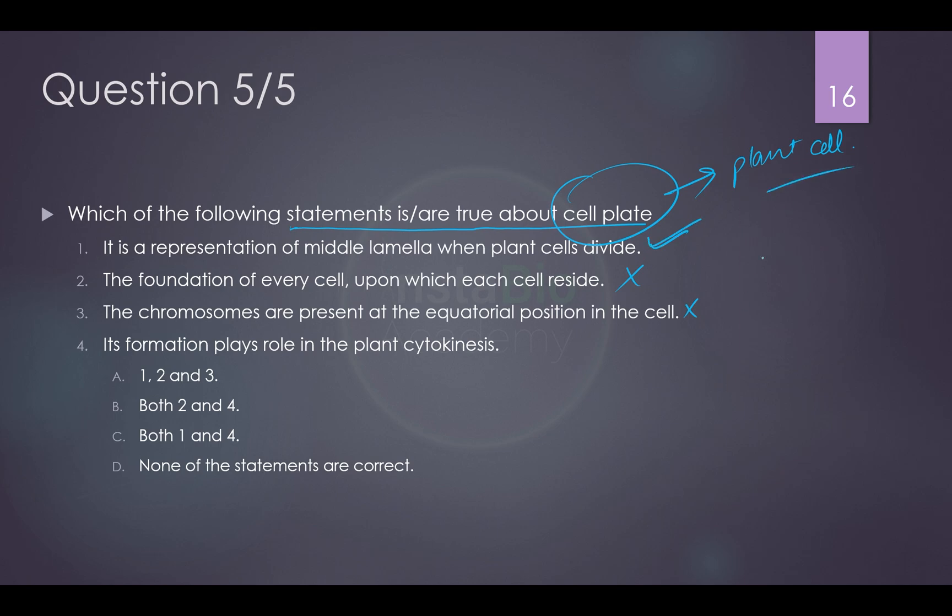This is metaphase plate, not cell plate. And it forms, by the way, this cell plate occurs in plant cell. We have seen from the first option, but in case you are not remembering this, its formation plays role in the plant cytokinesis. So the best answer is first and fourth. Let us see which one I have: first and fourth. C is the best answer. Alright. So this was for today.